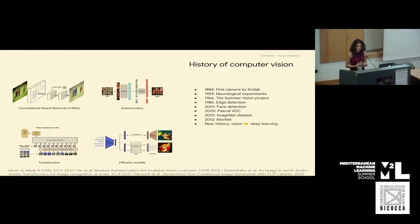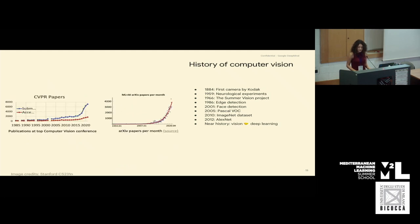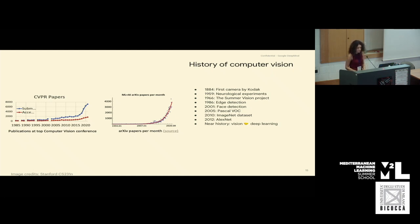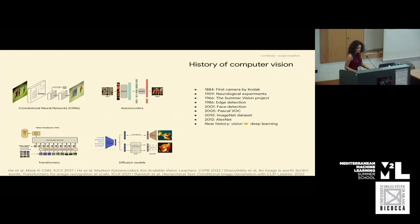If we come to today or near history, we observe that almost every computer vision algorithm or approach is tied with deep learning. Today we will talk about convolutional neural networks in more detail. There are autoencoders, transformers, and diffusion models as well, which are used quite often today. If we also look at the academic presence, the number of papers at CVPR has increased quite significantly, and the number of ML AI arXiv papers almost grew exponentially — showing the impact of deep learning on computer vision.